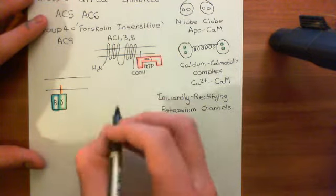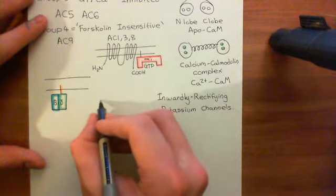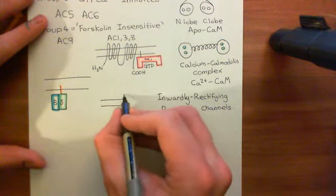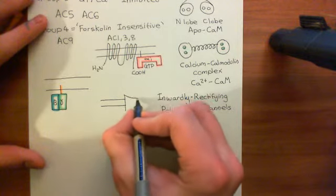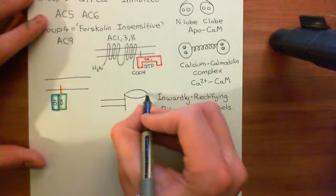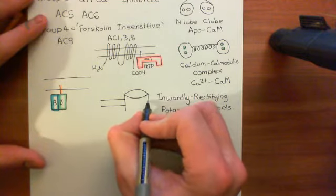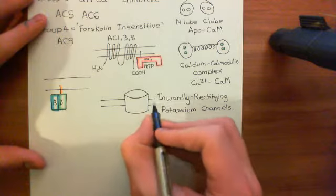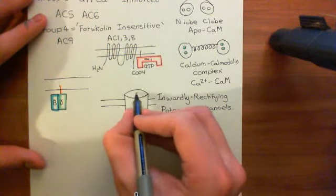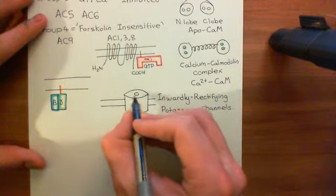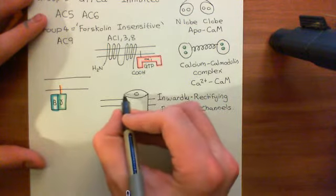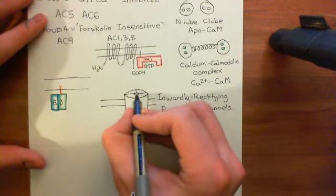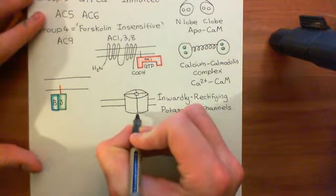Inwardly rectifying potassium channels are tetramers. They allow potassium to move through them and are made up of four separate proteins. Here is the inwardly rectifying potassium channel — it has a channel through the middle which allows potassium to move through it, and it's made up of four separate subunits, so it's a tetramer.